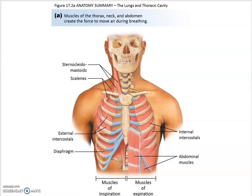The muscles that help achieve the differences in pressure for breathing include, most importantly, the diaphragm — a dome-shaped muscle sitting below the lungs. The intercostal muscles also play a role; we have external and internal intercostal muscles. Additionally, the sternocleidomastoid in your neck contracts during a very deep breath in — you can feel it if you just feel your neck as you take a deep breath.